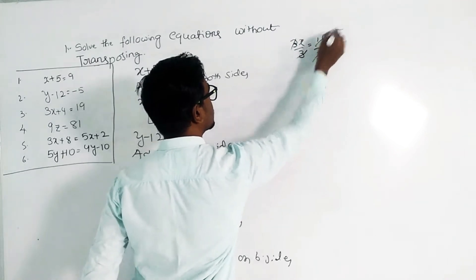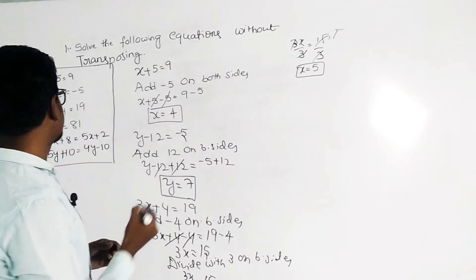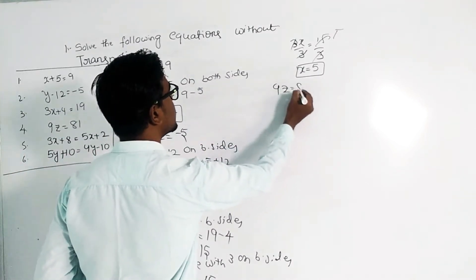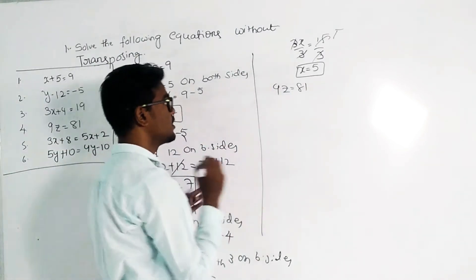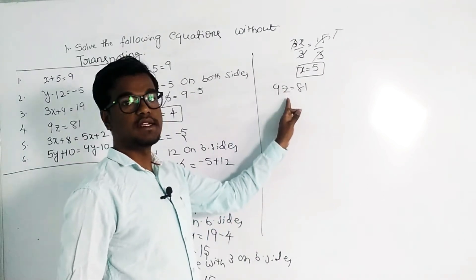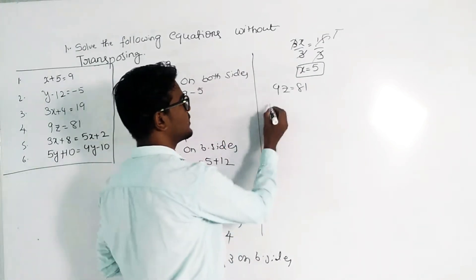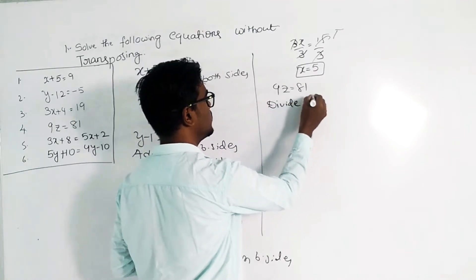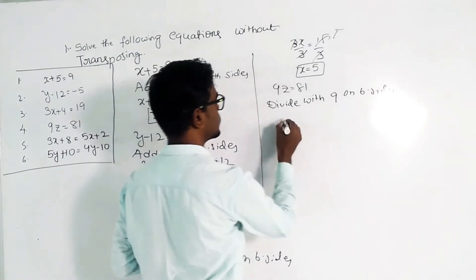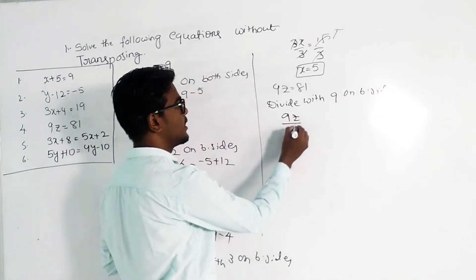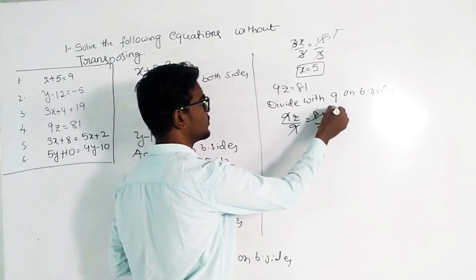Next one is 9z equals 81. Here 9 is multiplied with z, so we divide both sides by 9. 9z divided by 9 equals 81 divided by 9; the 9s cancel and 81 divided by 9 equals 9, so z equals 9.